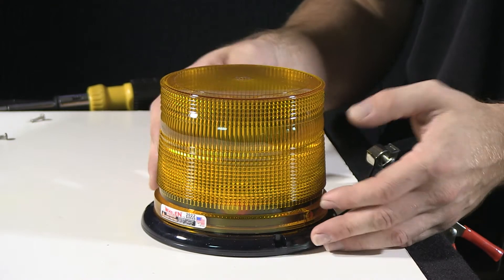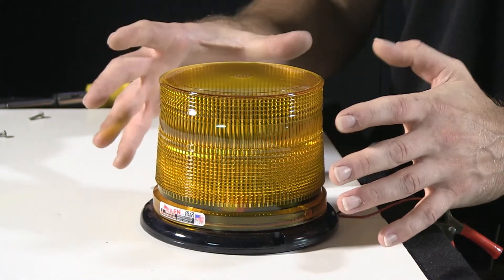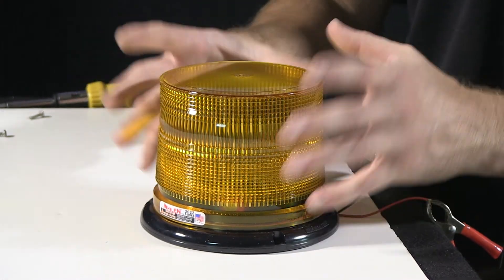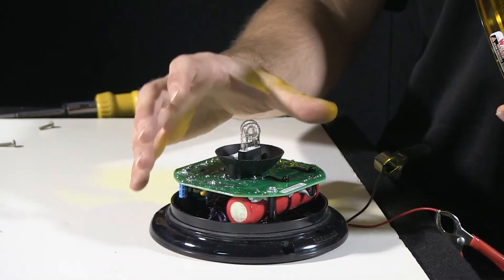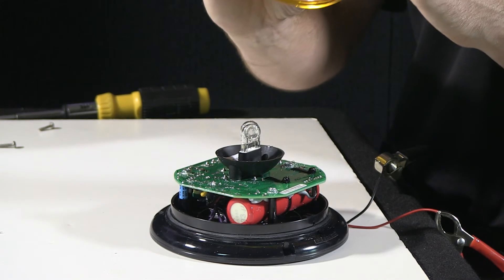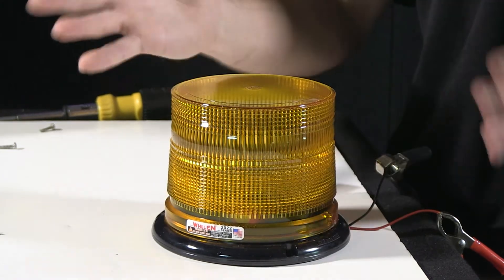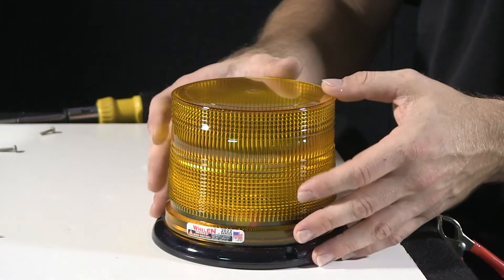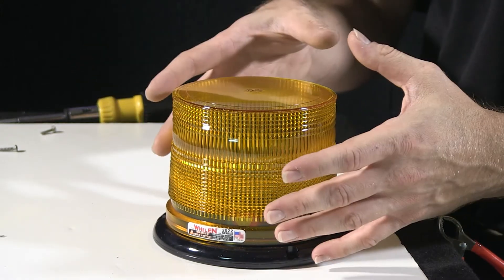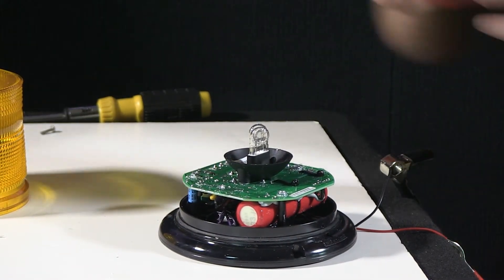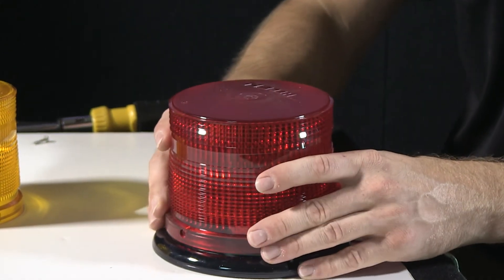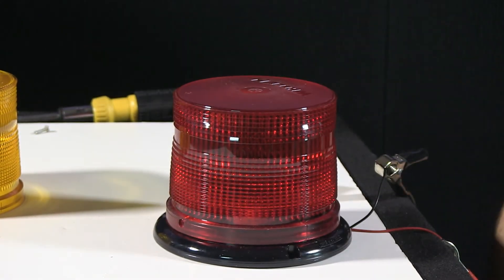With strobe beacons, unlike LEDs where the diode is what produces your color, your dome is what's going to create your visual color. Clear strobe tube inside bursts, shining through the plastic, giving you the visual effect. So with that, if you ever need to change your dome colors, it's just a simple swap.